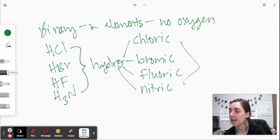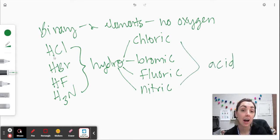And then they all end with acid. So this one is hydrochloric acid, hydrobromic acid, hydrofluoric acid, hydronitric acid.